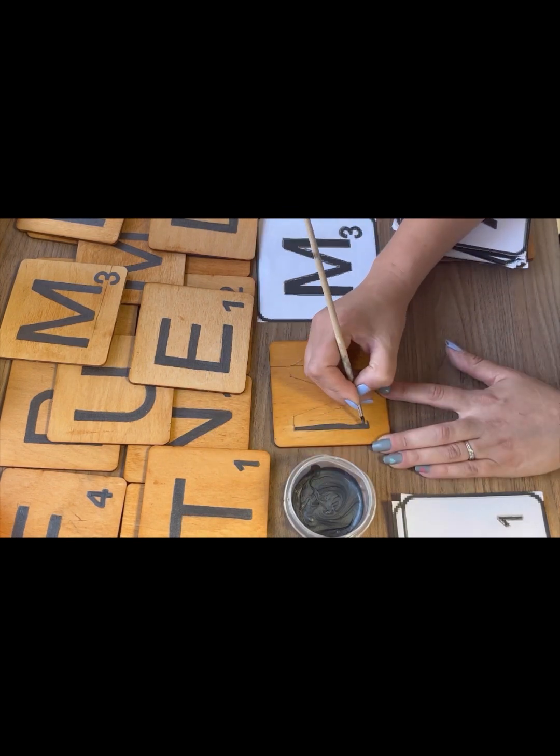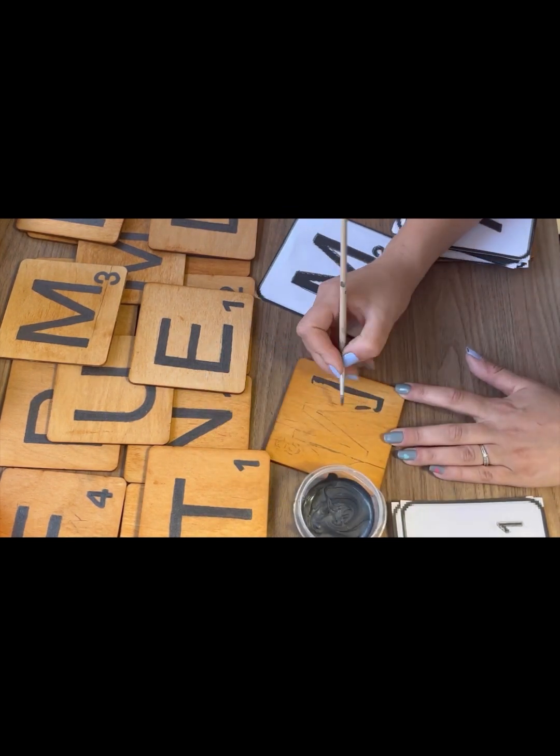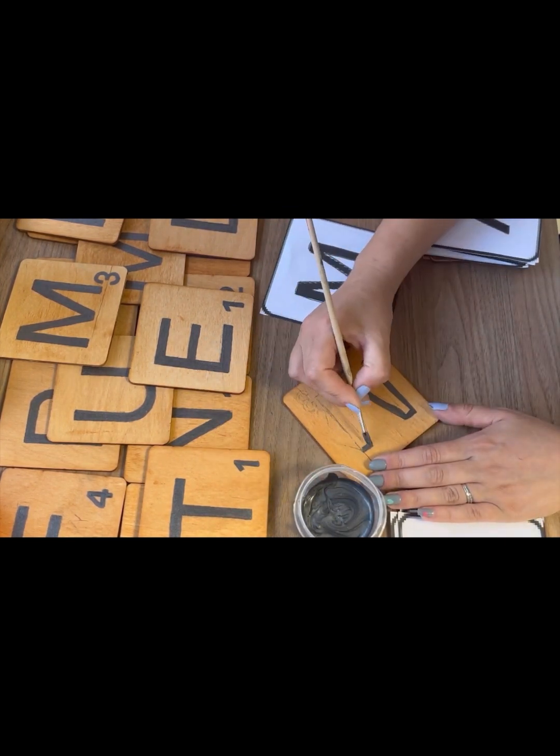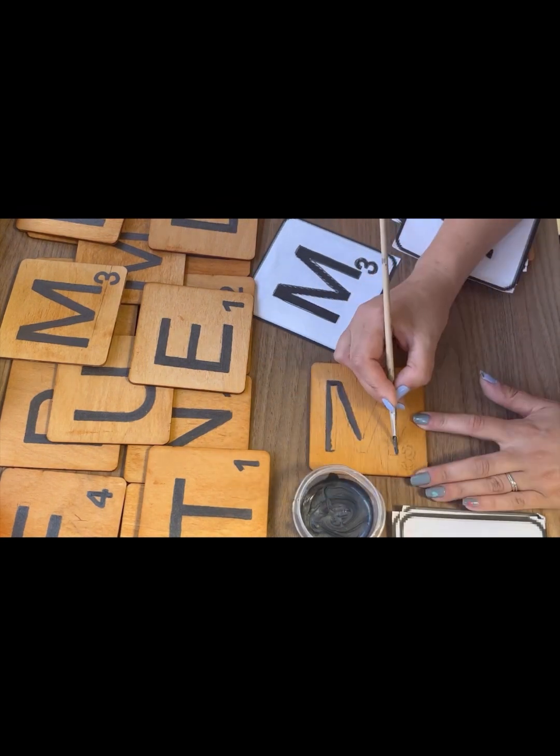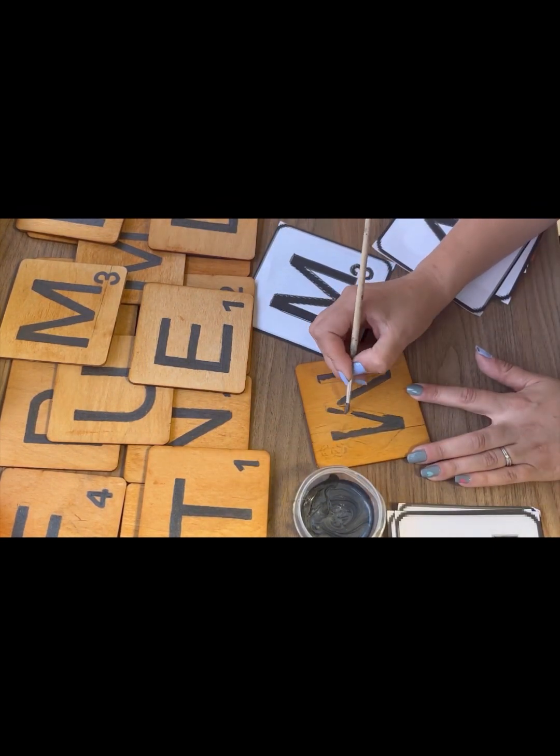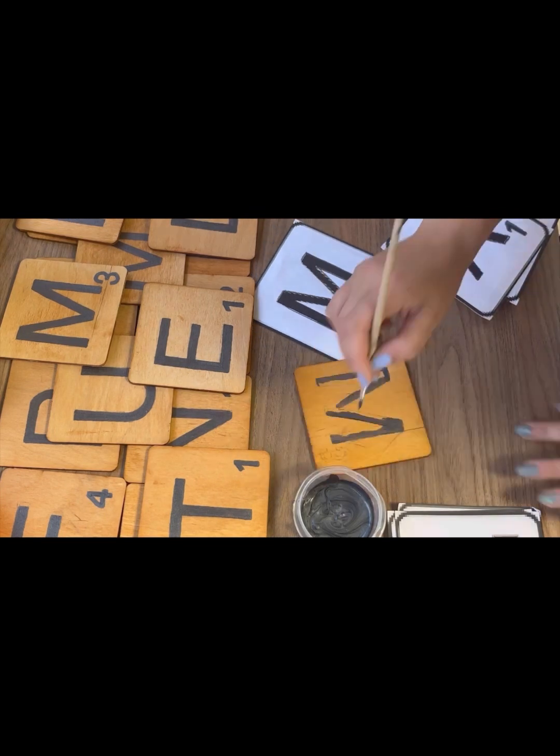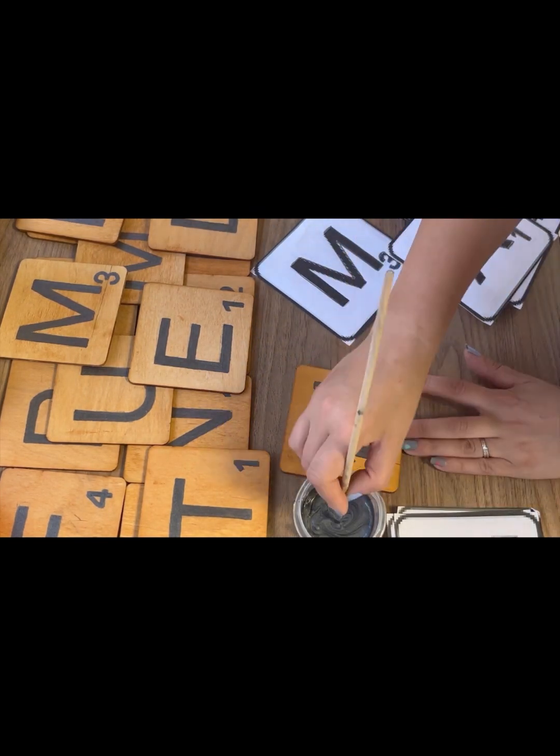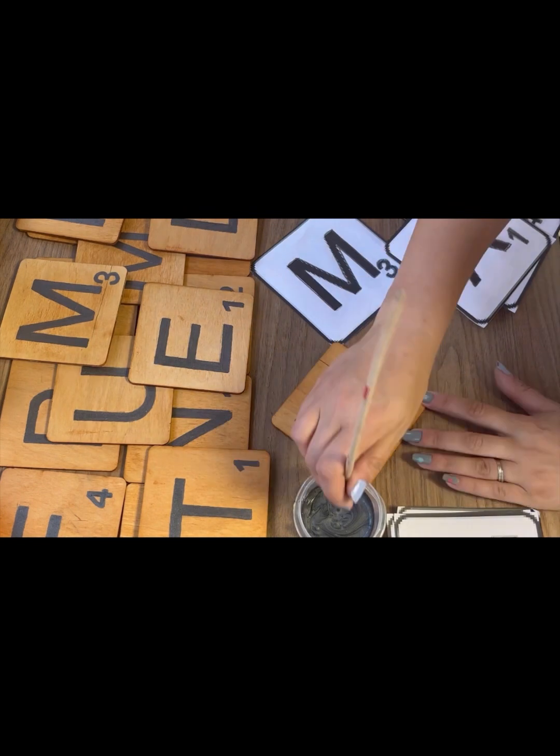Unfortunately I lost the footage of painting the first couple of tiles there, but you can see the ones along the top there on the table that I have already painted. On fast forward I'm going to show you three tiles being painted just so you can see what I went through and the method I used.